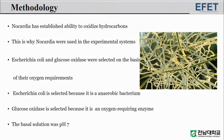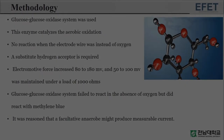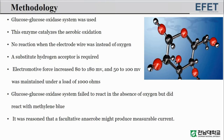The basal solution was pH 7. The glucose-glucose oxidase system was used; this enzyme catalyzes aerobic oxidation, with no reaction when the electrode wire substituted for oxygen. A substitute hydrogen acceptor is required. Electromotive force increased from 80 to 180 millivolts, and 50 to 100 millivolts was maintained under a load of 1000 ohms. The glucose-glucose oxidase system failed to react in the absence of oxygen but did react with methylene blue.